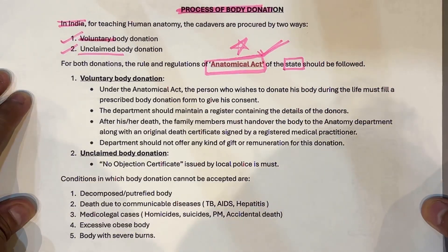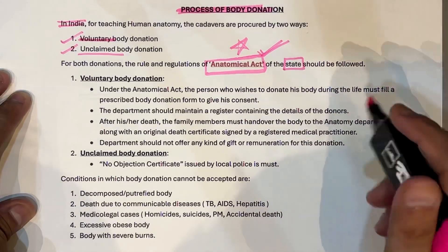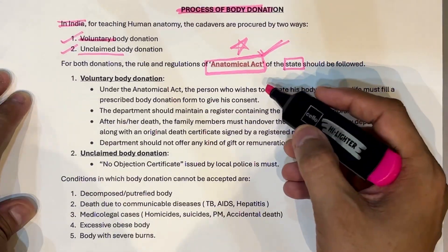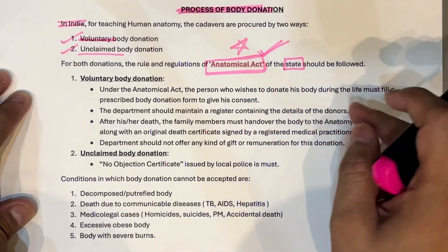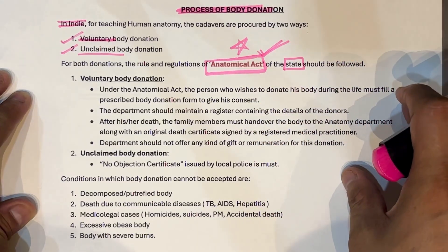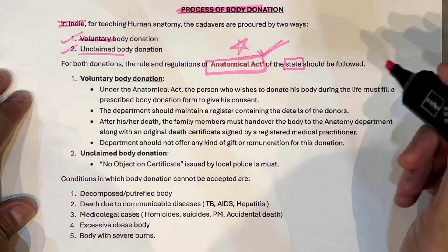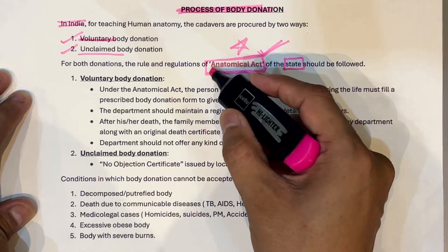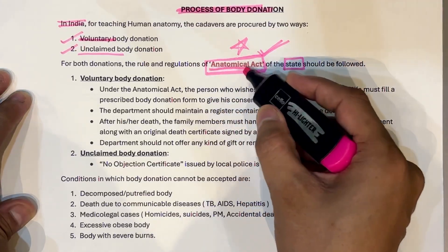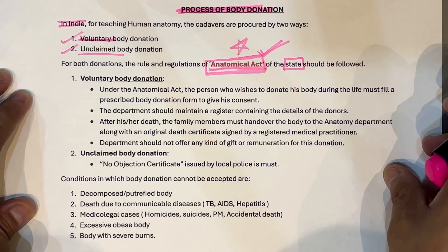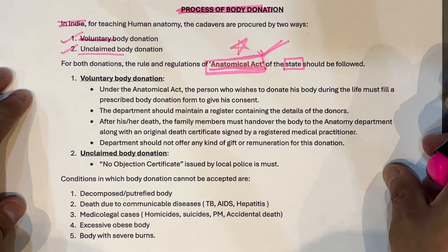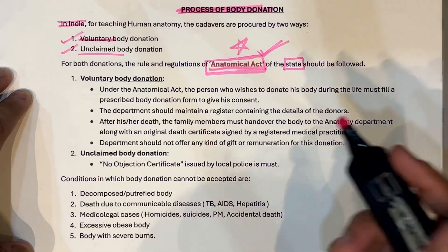Every state of India has its own Anatomical Act. For example, in Rajasthan you will have the Anatomical Act of Rajasthan; in Maharashtra you will have the Bombay Anatomical Act; in Gujarat you have the Gujarat Anatomical Act. In this way every state has its own Anatomical Act, but the rules and regulations of this act are almost similar.